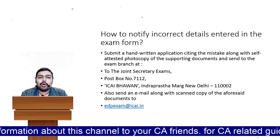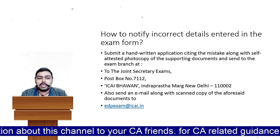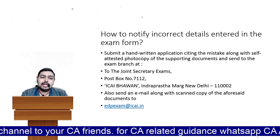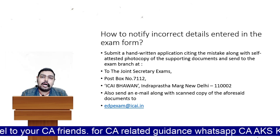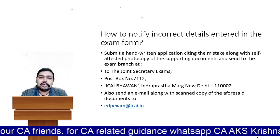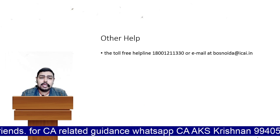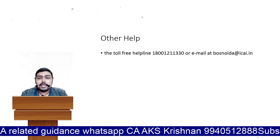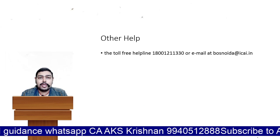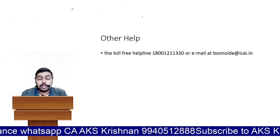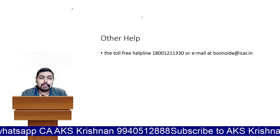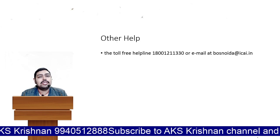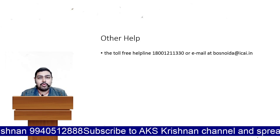If you entered some incorrect details, how do you do a modification? You have to write a letter with self-attested photocopies and send it to the address shown on the screen. For other helpline options, phone numbers and email IDs are shown on the screen — you can email bossnoida@icai.in or call the toll-free number. I hope this video is helpful. Kindly share it with your friends and create awareness about CA. Thank you.